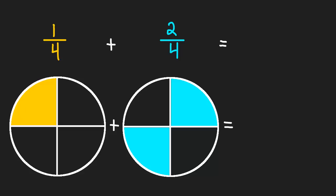All right, here we have two very simple fractions that we're adding together. We have one-fourth, one out of four pieces, plus two-fourths, two out of these four equally sized pieces.